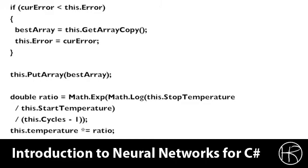The put array is then called to save this and we calculate the ratio according to the formula that we looked at earlier in this part. We take the math.exp to calculate a logarithmic rate of decay for the temperature as we progress from the beginning temperature onto the ending temperature. This then continues for other cycles.